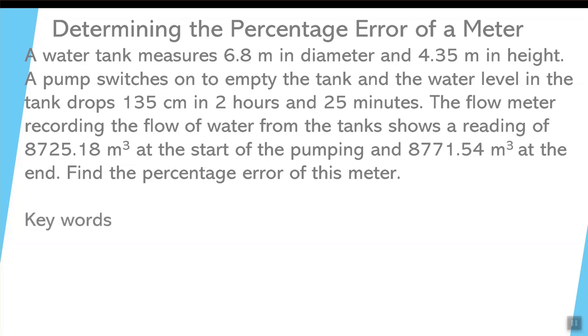There are some keywords in here that you need to pick up on. The first keyword is diameter, so that tells you the shape of the tank as well as its dimension, and it's 6.8 meters in diameter. The second piece of information that's important is how much the water dropped, and that distance is 135 centimeters or 1.35 meters. Now notice we're only worried about how much the water dropped. We're not concerned about the height of the tank because it doesn't tell you that the tank is completely full.